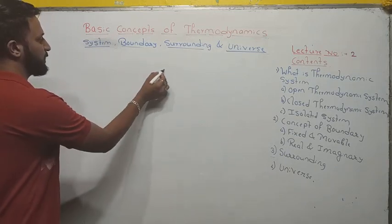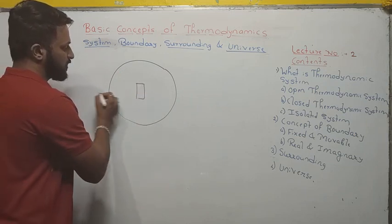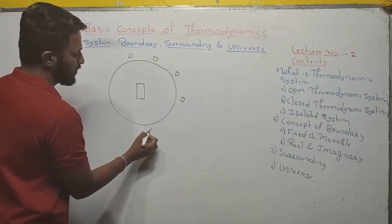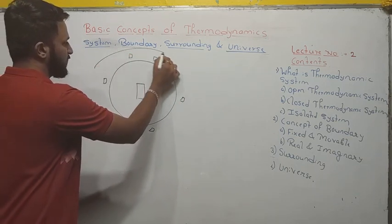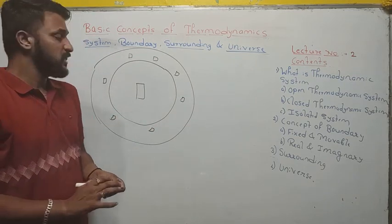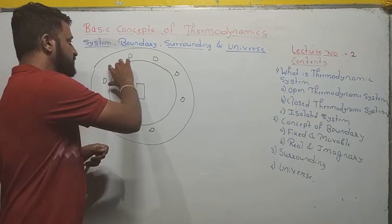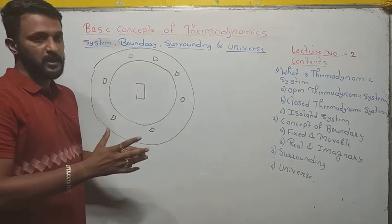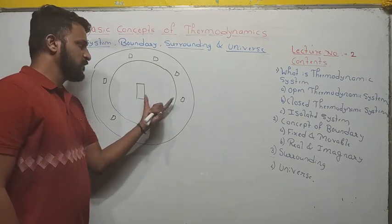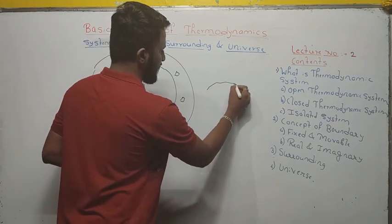To explain the concept of system, boundary, and surrounding, I would like to take an example of a cricket ground. In a cricket ground there will be a pitch at the center, and the ground is surrounded by people who are sitting in the stands. The entire thing is called the stadium. The pitch is the area where something is actually happening, the stands are where people are sitting, and the boundary separates these regions. Together, it is called the stadium.